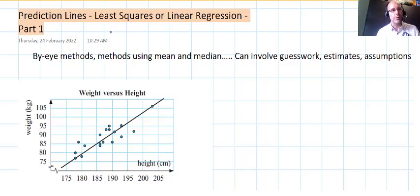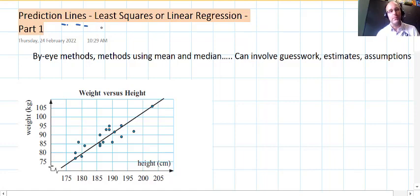Welcome back everyone, we're continuing our journey with prediction lines, lines of best fit which we can form predictions from. We've just been looking at by-eye methods previously, or methods that involve things like fairly basic uses of the mean or the median. These are things we've seen that involve a bit of guesswork or estimating visually or making some assumptions about statistics and some fairly basic calculations. They have their pros and cons, so we're moving in this video towards what's called least squares regression.